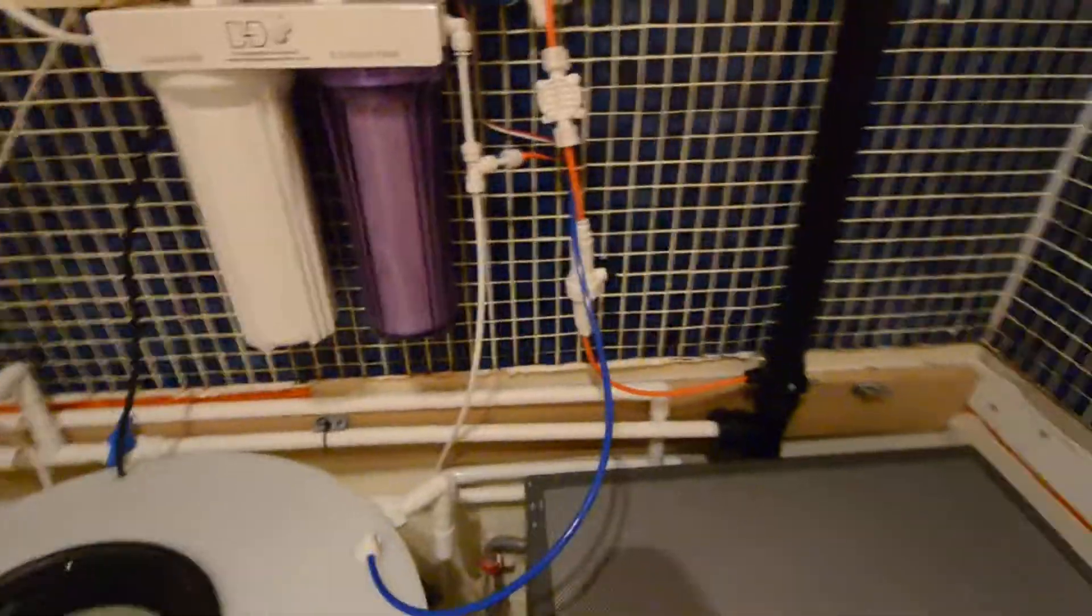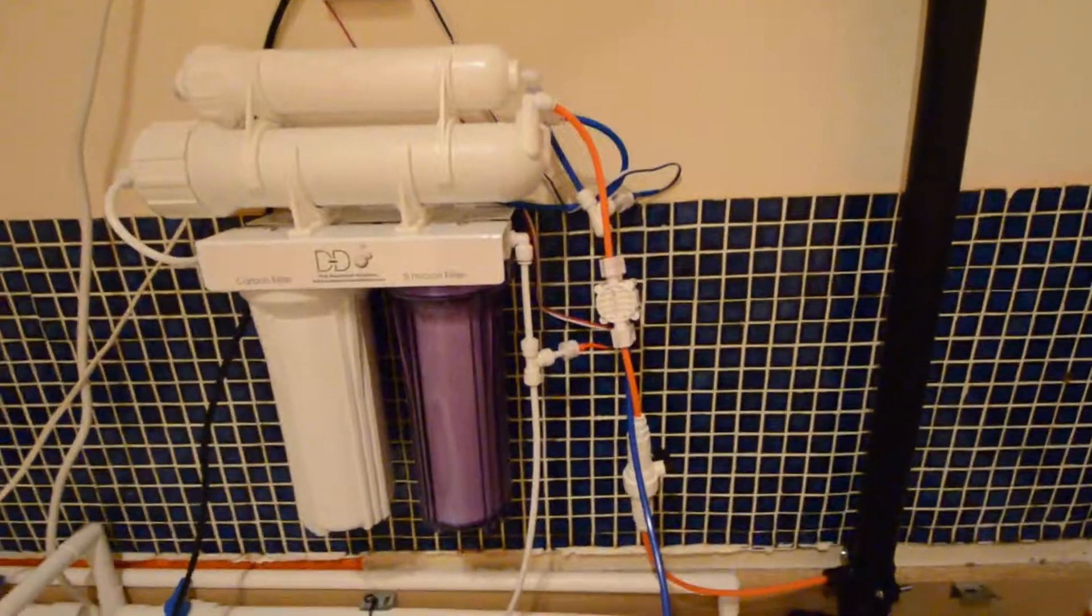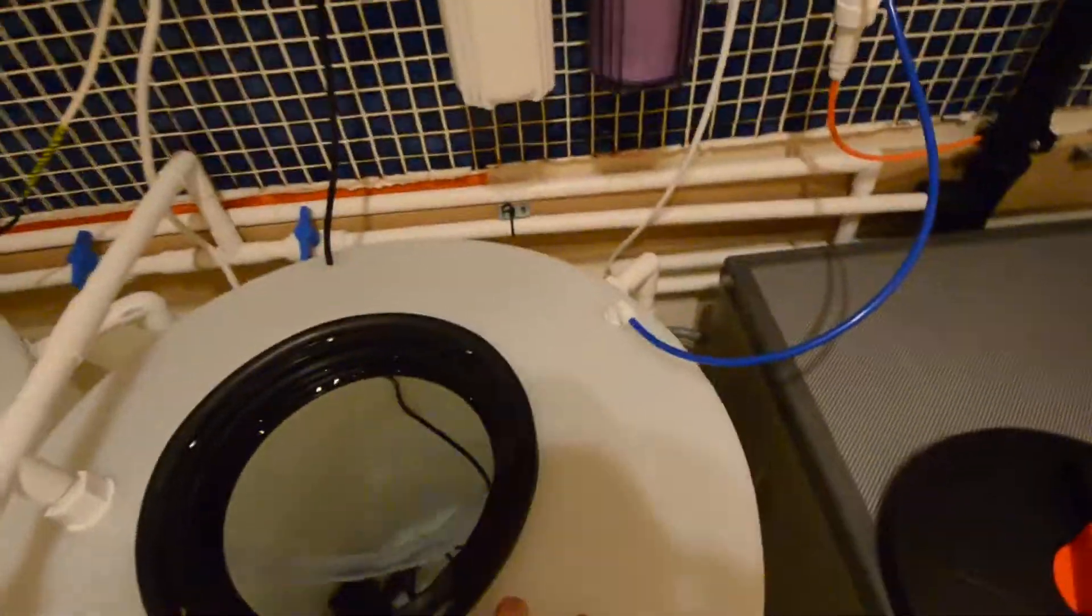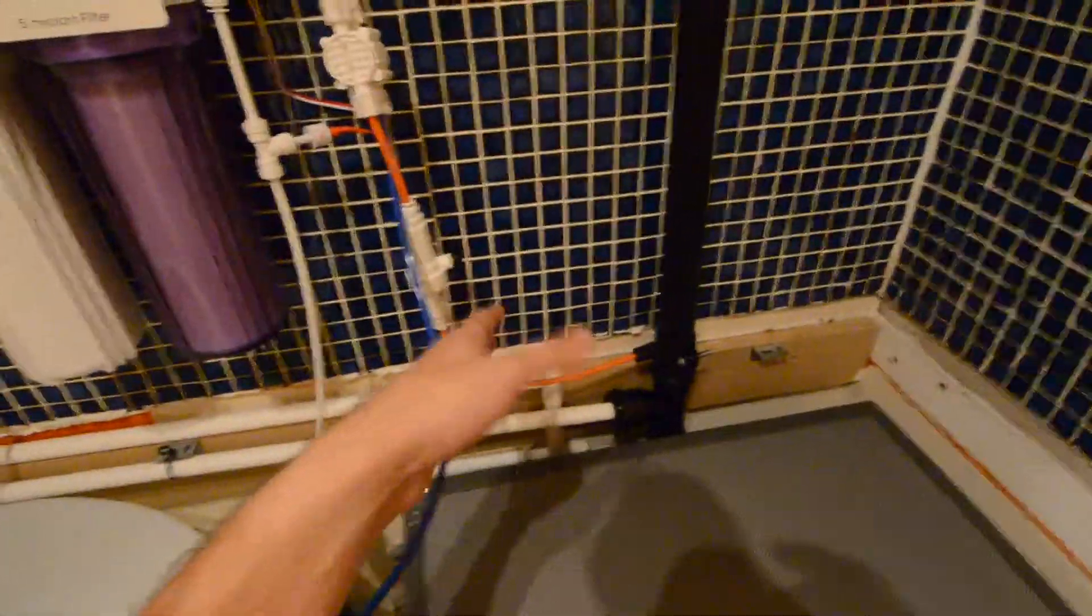Now one important thing if you're looking at installing this system: you can see the orange pipe here is the waste water going out. For every one liter of clean water it's producing, three liters of waste water is being produced.